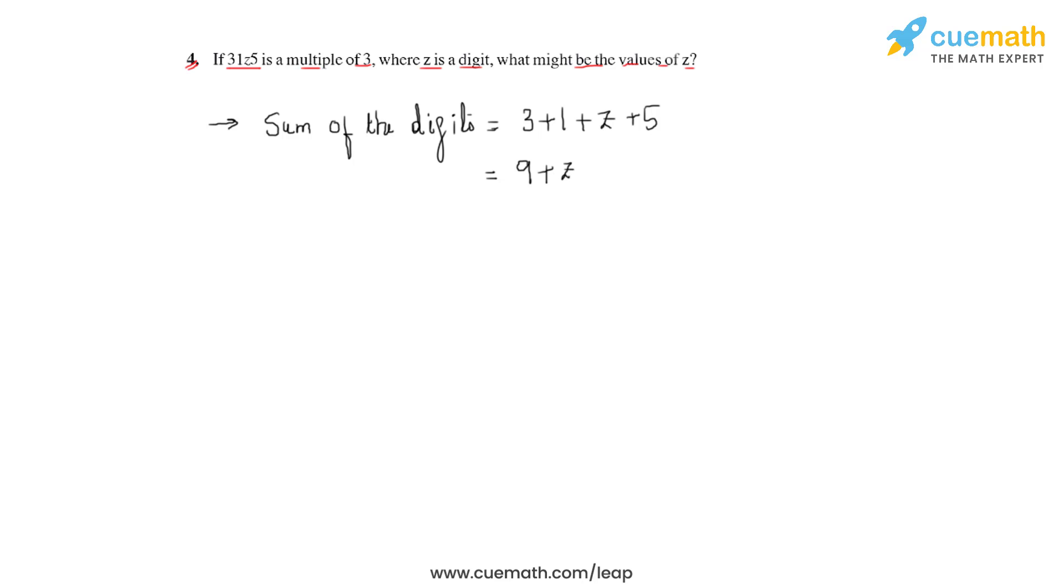Again, we are going to assign different values to z such that the sum would always be divisible by 3.